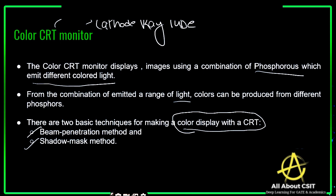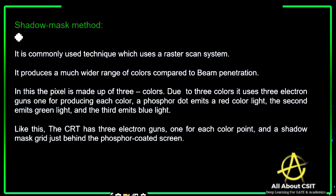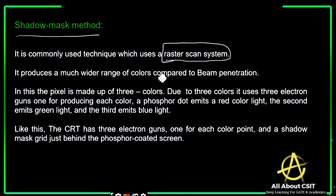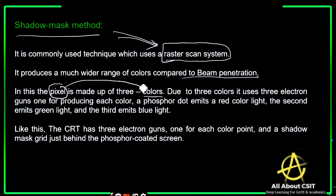Before proceeding with the beam penetration method, let's have a basic idea of the shadow mask method. The shadow mask technique uses a raster scan system and produces a much wider range of colors compared to beam penetration. Beam penetration is limited to only a few colors, whereas the shadow mask produces a wide range. In the shadow mask method, each pixel is made up of three colors.